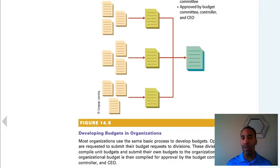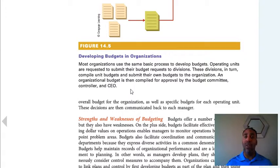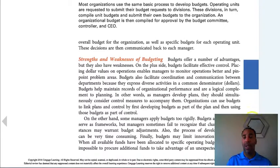Be sure to check out the diagram on developing budgets in organizations. Most organizations use the same budget process: operating units submit budget requests to divisions, divisions compile unit budgets and submit to the organization, and an organizational budget is compiled for approval by the budget committee, controller, and CEO. When you're doing budgets, always start with the sales budget — that tells you how much you predict you'll sell for the year, and then you can create the other budgets from there.